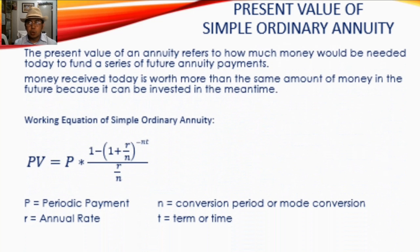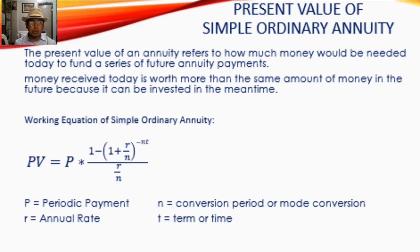The present value of the annuity refers to how much money would be needed today to fund a series of future annuity payments — in other words, how much you need to save today in order to achieve a target future value.